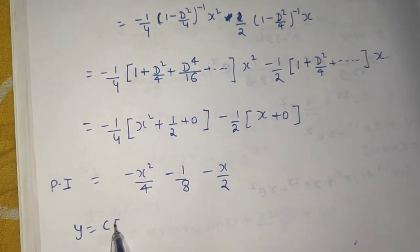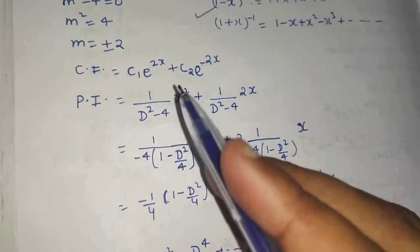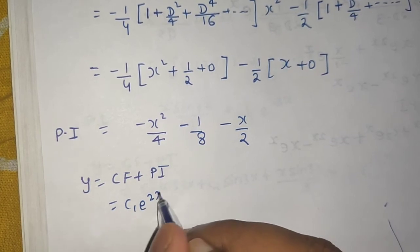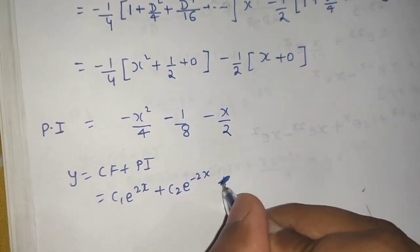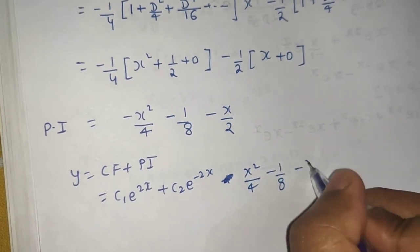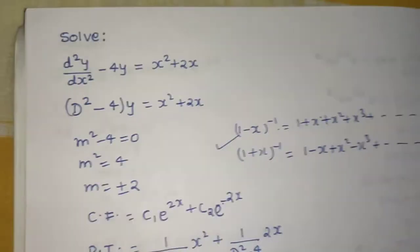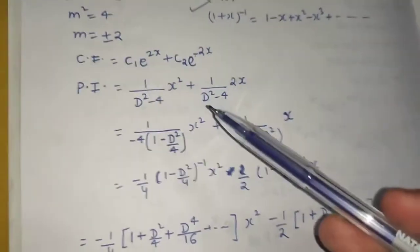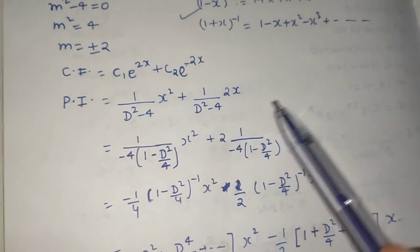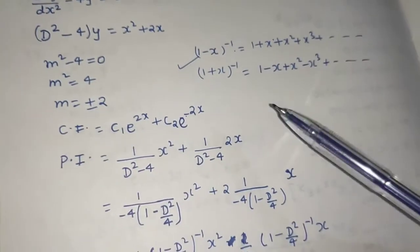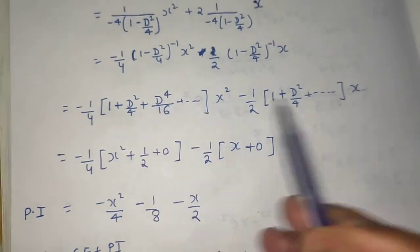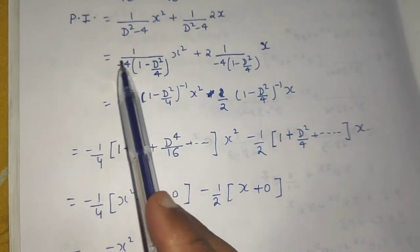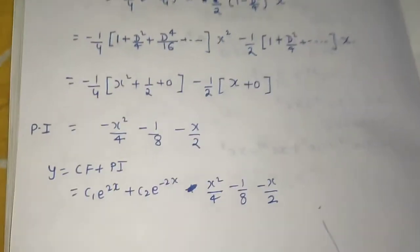So y finally is CF plus PI. The complementary function was c₁e^(2x) plus c₂e^(−2x), and adding the particular integral, we write minus x²/4 minus x/2 minus 1/8. This is your final answer. The calculation was smooth as always — finding the complementary function, then the particular integral, and applying the rule for x raised to power n. You can apply the operator on x² plus 2x at the same time or distribute into two terms; either way, the denominator is common and you just differentiate.